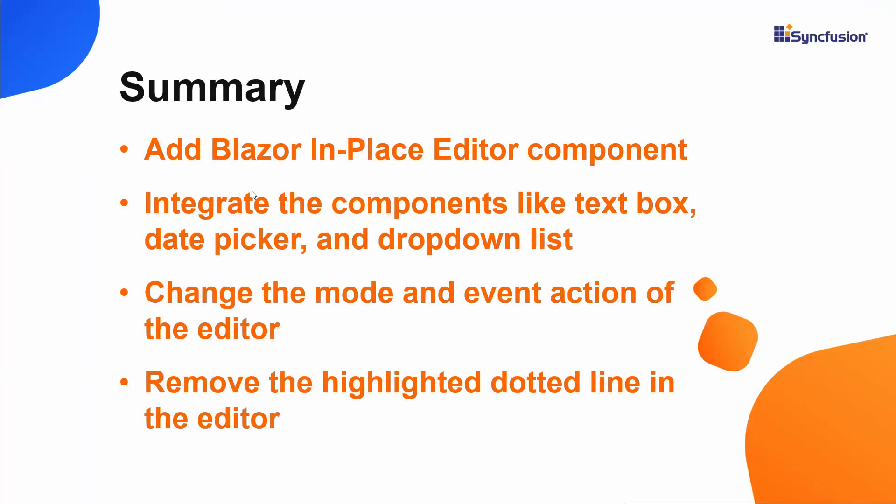Let me recap what we have covered in this video. We saw how to create a Blazor WebAssembly app using Visual Studio 2019 and add a Syncfusion Blazor in-place editor component to it. Also, we discussed how to integrate the components like textbox, date picker, and drop-down list. We also saw how to remove the highlighted dotted line in the editor. Finally, we saw how to change the mode and event action of the editor. If you would like to see the working code of this example, you can download it from the GitHub link in the description below. I have also provided a link where you can see if you qualify for a free community license to use all our Blazor products. If you found this video useful, don't forget to click the like button and subscribe to our channel to watch more videos like this.